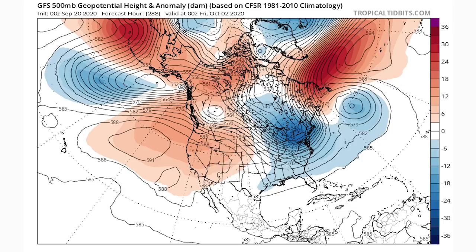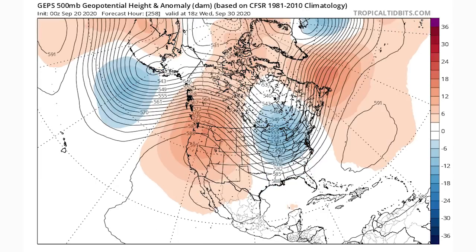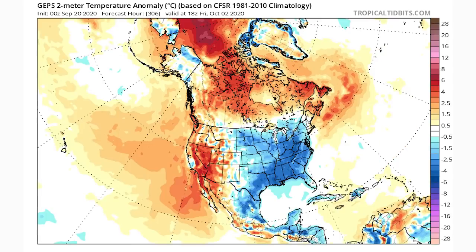We're going to look at one more map on an ensemble model and then get into actual temperatures. Here's the same look on our Canadian ensemble model, showing the same exact thing — actually a little more classic, with a very positive PNA and very negative NAO. This leads to a strong trough in the eastern United States, as you can see those lines dip way down. Here are the temperature anomalies on this same frame: blues in the eastern United States, four to eight degrees below average Celsius. Notice the above-average temperatures out west — that's our positive PNA.